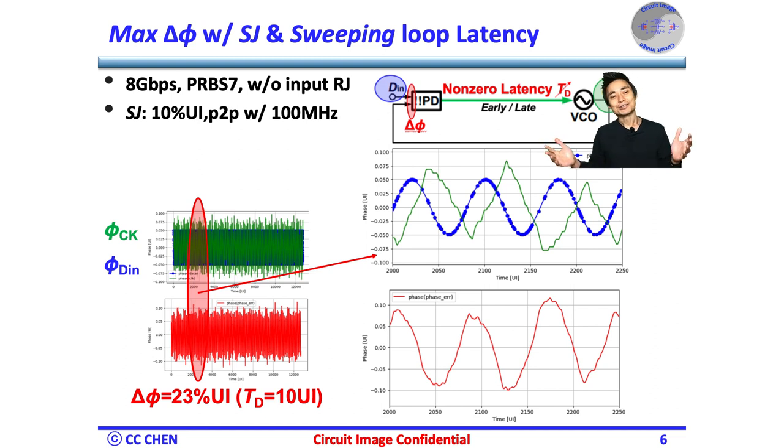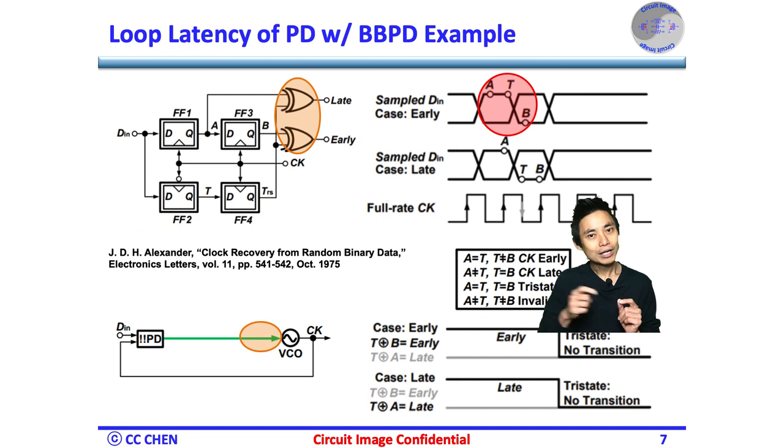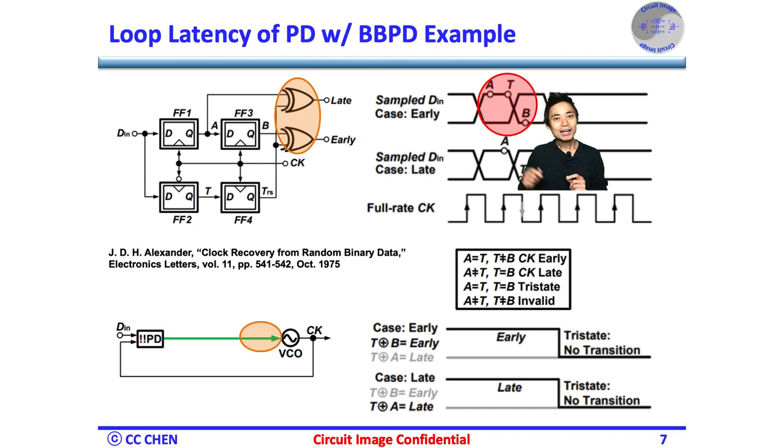But, there are still a few subtleties stopping us. Can you think about the sampling image for 5 seconds? Correct, for the 2x oversampling Bang-Bang PD-CDR, the clock must sample the two data samples and one transition sample to figure out if the clock is earlier or later than the input data.